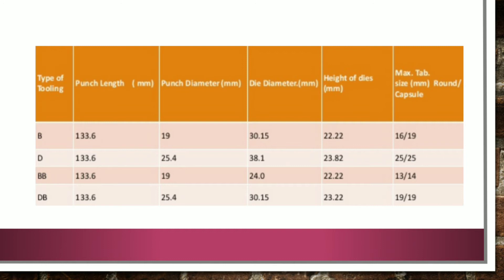Here you can see a table with a detailed description of different types of tooling. There are four types: B tooling, D tooling, BB tooling, and DB tooling. B tooling has a punch length of 133.6 mm, punch diameter of 19 mm, die diameter of 30.15 mm, height of die of 22.2 mm, and maximum tablet size of 16 mm round or 19 mm capsule.